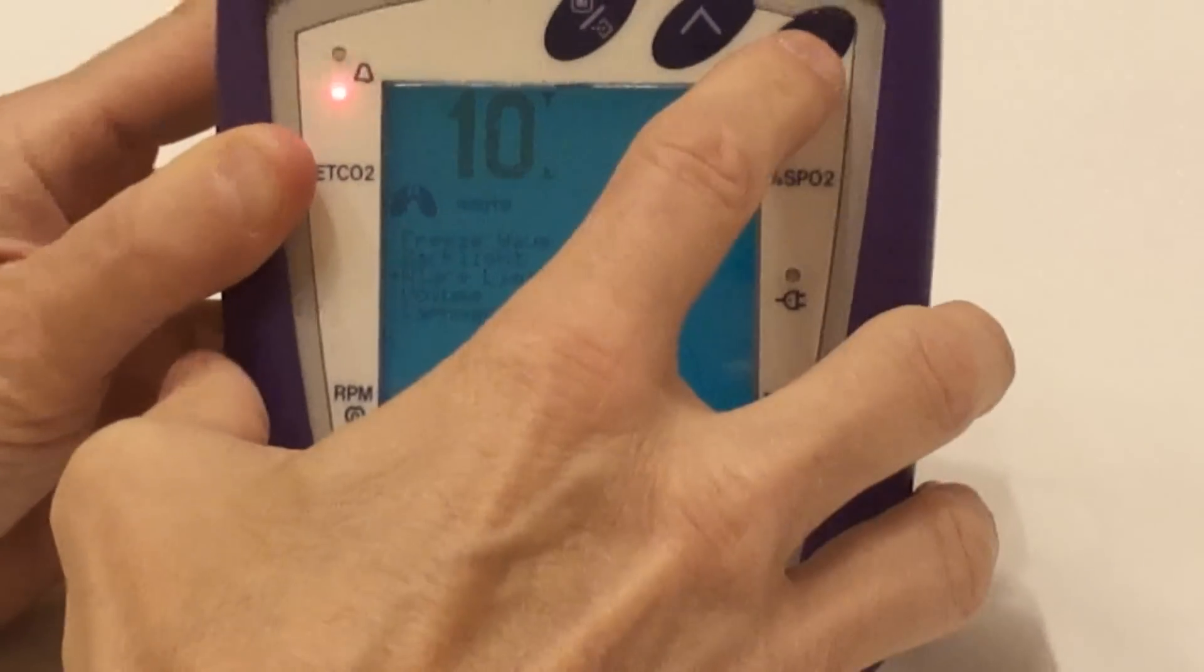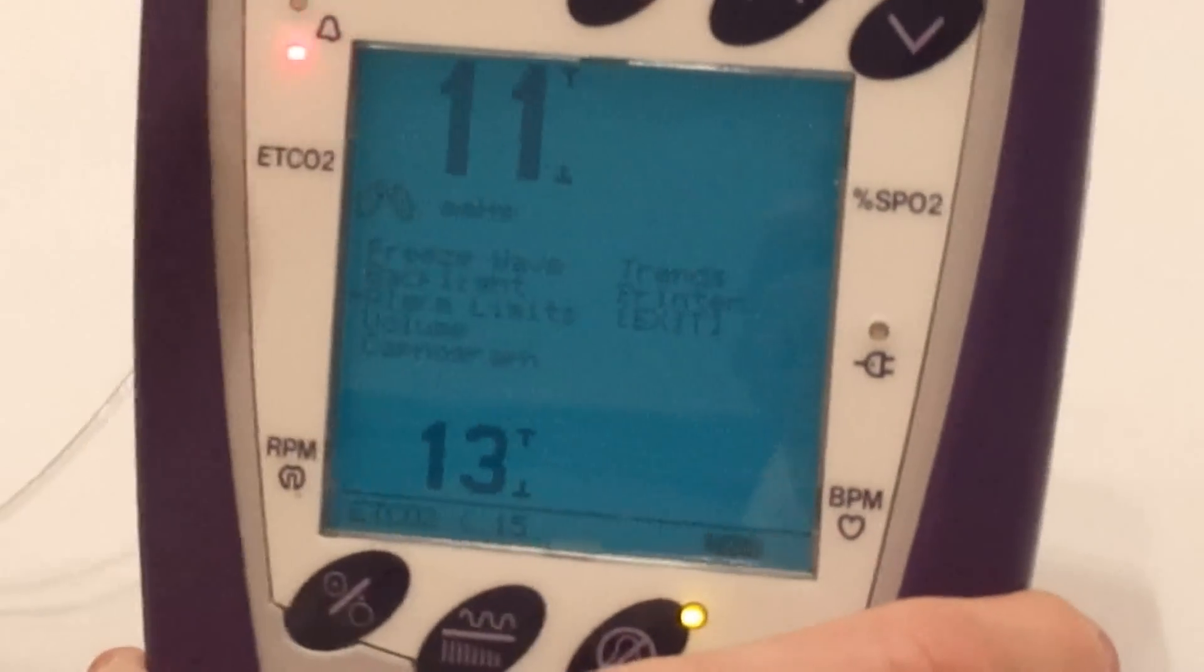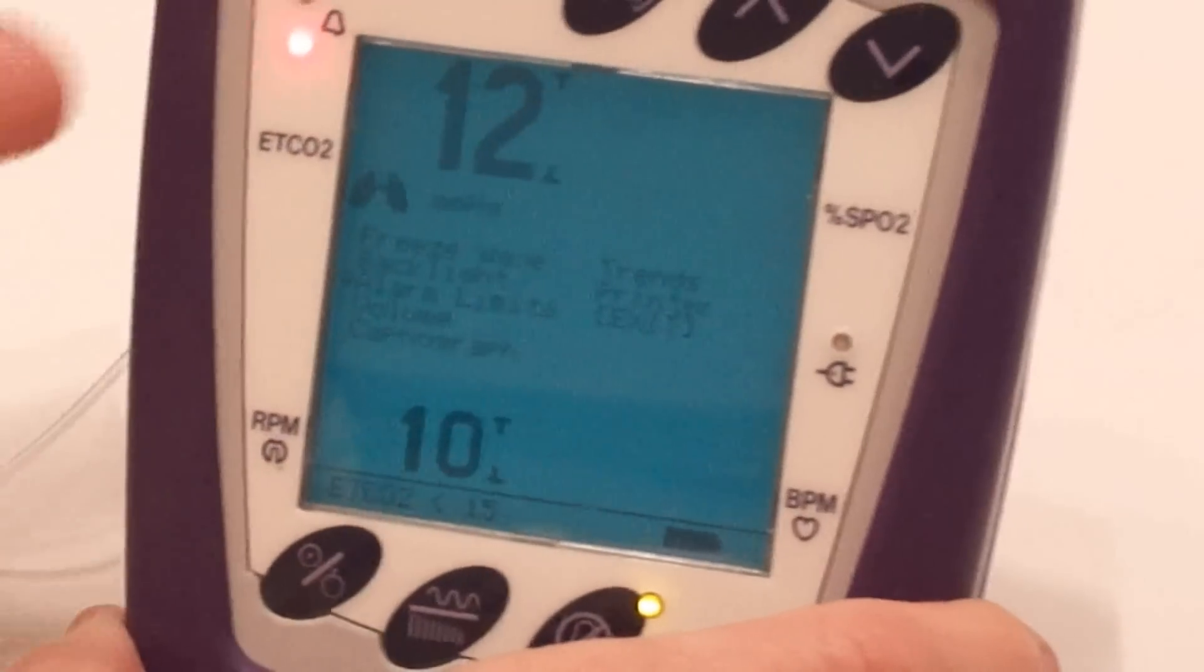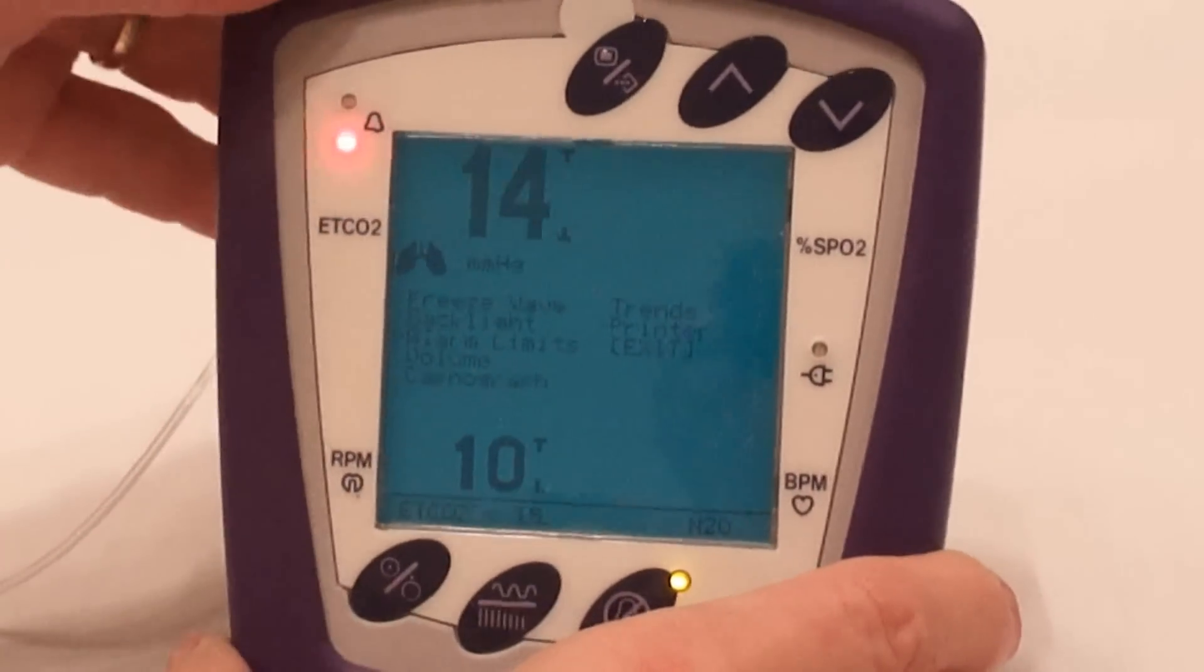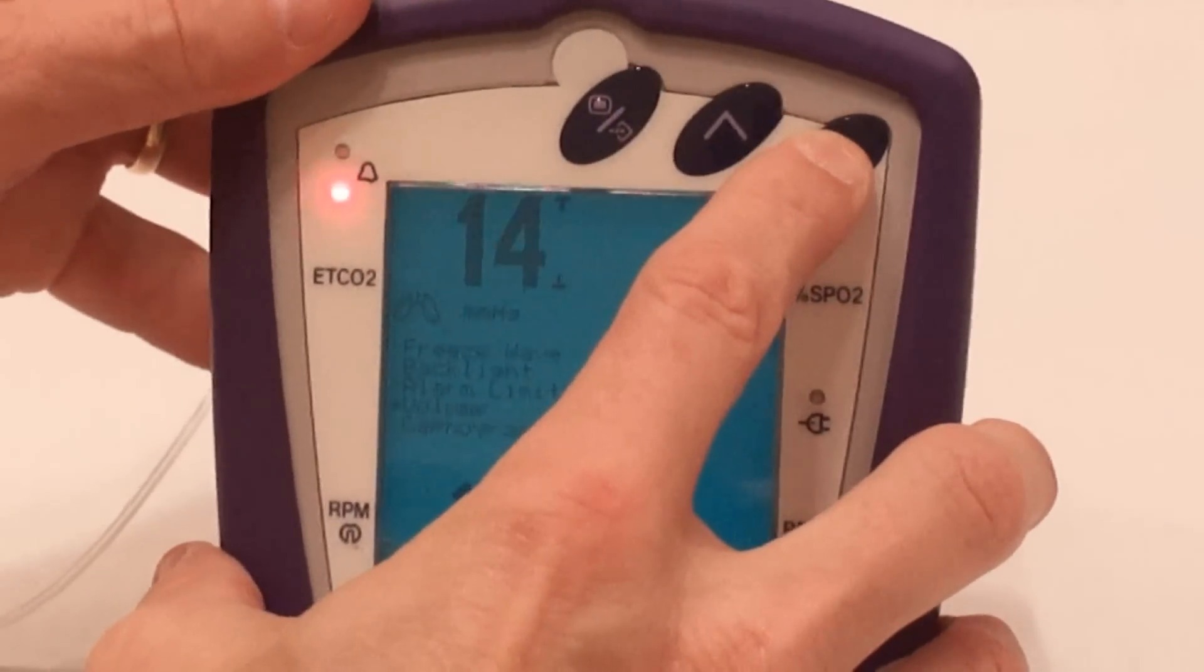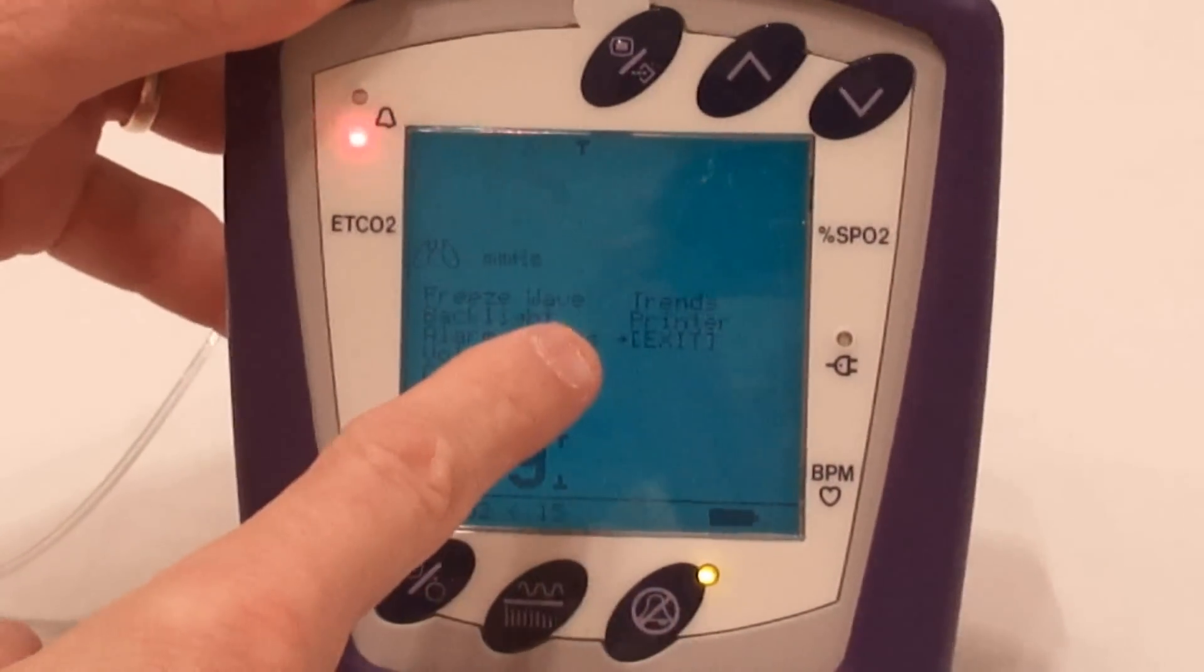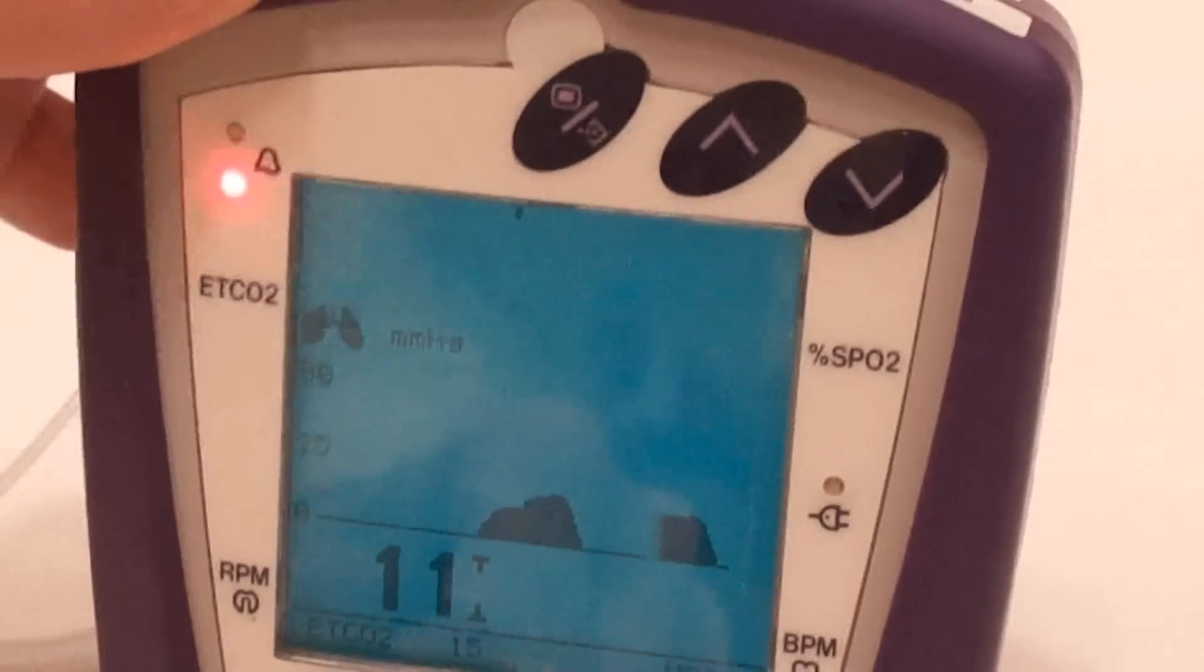Like that. Okay, now to exit the menu, we can also set the volume of the alarms. We can also set capnography to turn it on or off, which you would always leave it on. We can also set trends and printer. But in this case, we're going to go on down to the exit on the menu button. As you see right there, a little arrow is pointing on the exit. Then you press menu button and you're right back where you were.